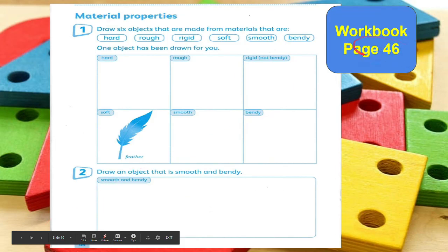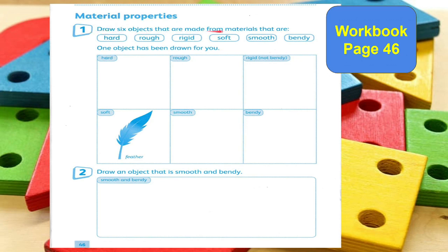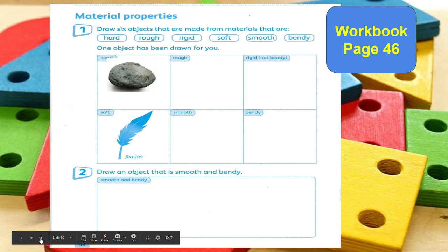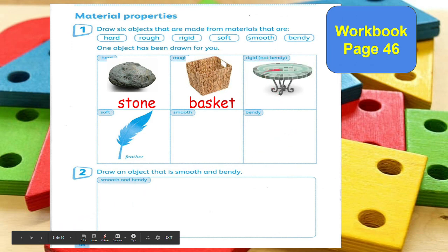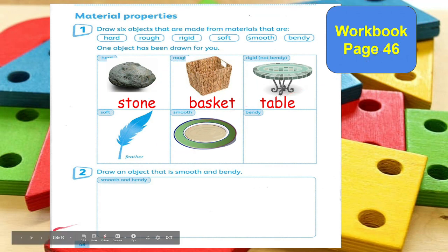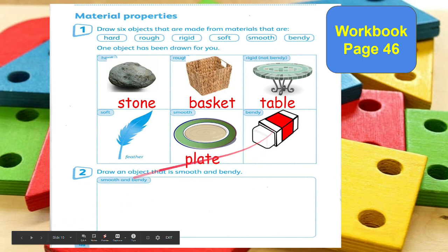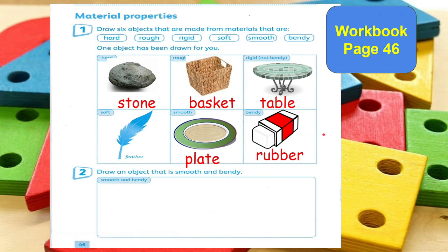For workbook page 46, Material Properties, we draw six objects. For hard, I drew a stone — stone has a hard material. For rough, I put a basket — the material of this basket is rough. For rigid — not bendy, really tough, you cannot bend it — I put a table. For smooth, I put a plate; if you touch your plate, the texture is very smooth. For bendy, I put rubber or eraser — the material is bendy.